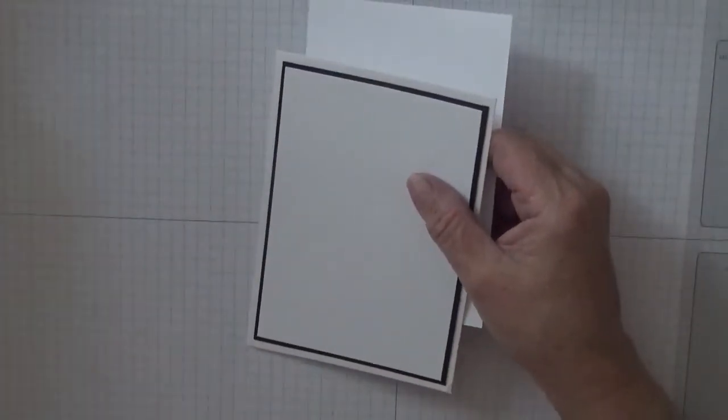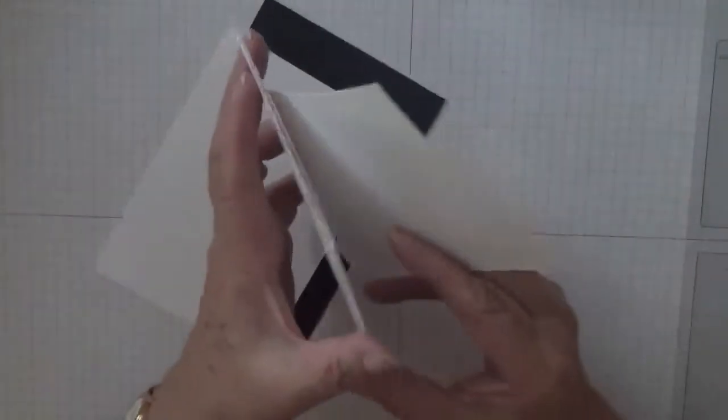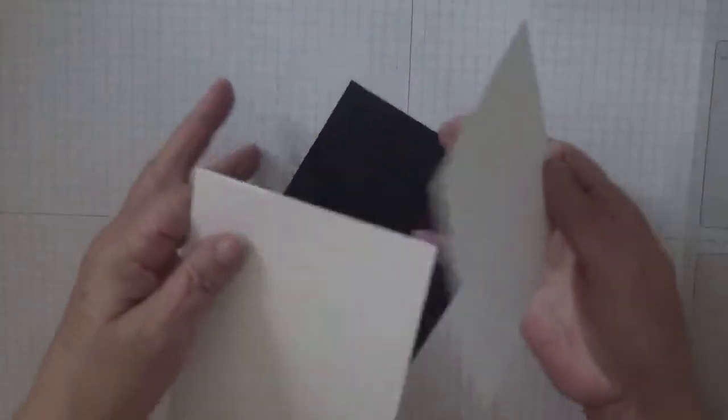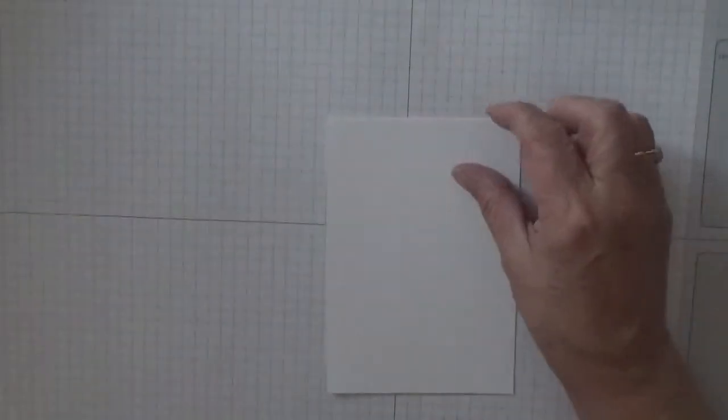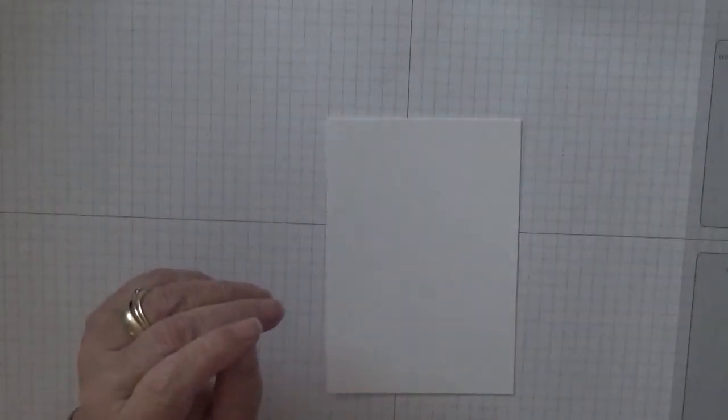And then I've also got a piece for the inside. So to get started, we're going to stamp on this and I'm going to use Versafine Tuxedo Black.